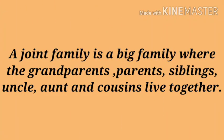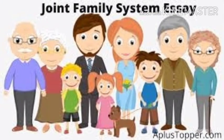Next is joint family. A joint family is a big family where the grandparents, parents, siblings, uncle, aunt, and cousins live together. बच्चों, joint family यानि कि संयुक्त परिवार एक बड़ा परिवार होता है, जिसमें parents, grandparents, uncle, aunt, siblings यानि कि सगे भाई-बहन, cousins यानि कि चचेरे भाई-बहन, सब मिलकर एक साथ रहते हैं. The children of our uncle and aunt are our cousins — हमारे uncle और aunt के बच्चे हमारे cousins यानि कि चचेरे भाई-बहन हैं.